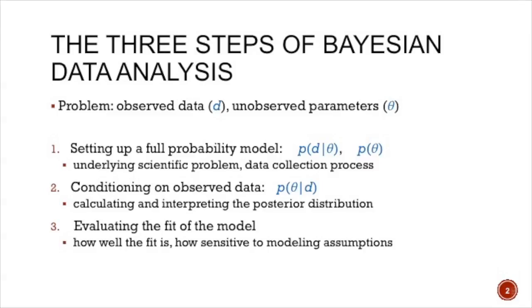Let's focus on the Bayesian part first. In any given application, you have some observed data D, and you have some unobserved parameters that you want to learn from the data. Bayesian data analysis has three main steps. The first step is that you encode your uncertainties in the parameters and in your data using probability distributions. You put a prior distribution on your parameters based on previous studies in the field before observing the data, and you also model the interaction between the data and the parameters using the likelihood, which depends on the underlying scientific phenomenon that you're studying.